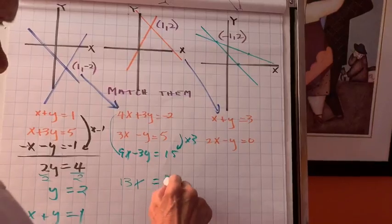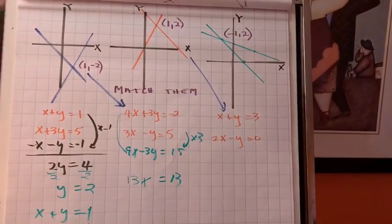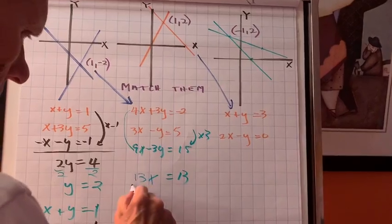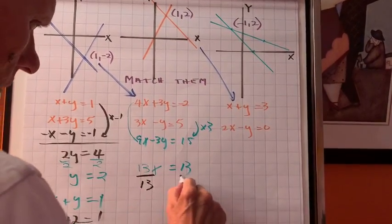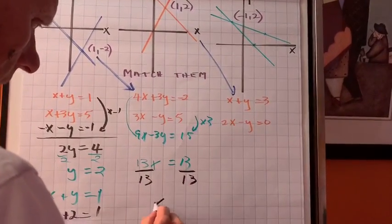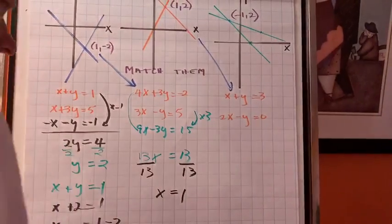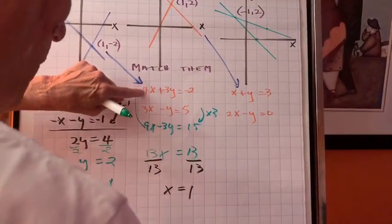This cancels. Negative two and fifteen is thirteen. Divide by thirteen. X is one. Now if x is one, let's go put it back in here.